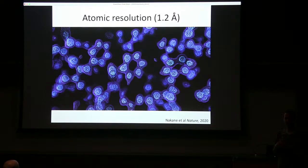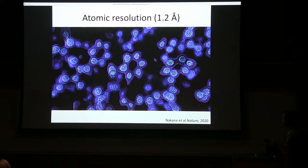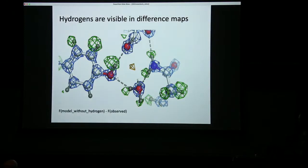All those combined led to a reconstruction of apoferitin to 1.2 angstroms resolution on data collected in about a day and a half on one of these prototype microscopes. At 1.2 angstroms resolution — about the shortest distance between heavy atoms in a protein molecule — you can see individual blobs of reconstructed density for almost all the heavy atoms in the apoferitin structure. Hydrogens are, of course, much lighter than the carbon, nitrogen, and oxygen atoms.